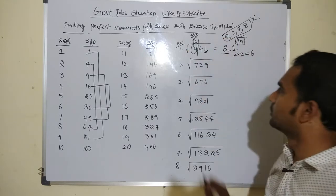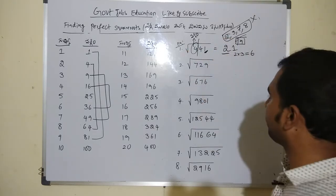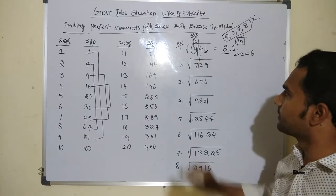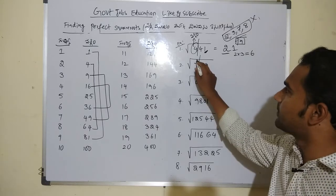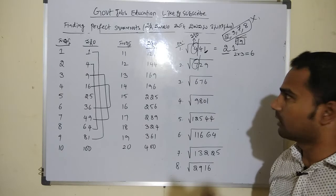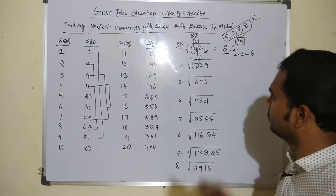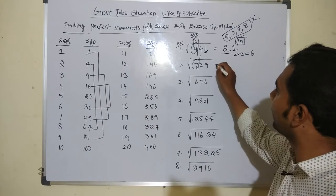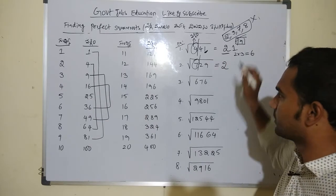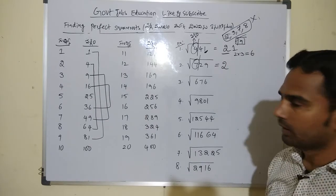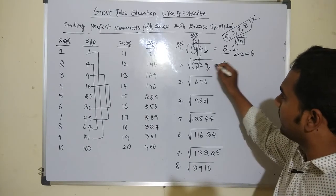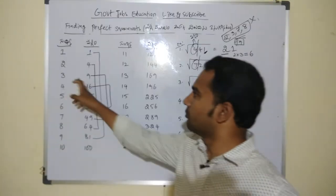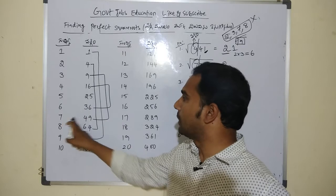Next problem: left side is 7, which is not a perfect square. So the nearest perfect square is 4, meaning 2 is the perfect square root. The unit value is 9. Since 9 is the unit digit, the square root candidates are 3 or 7 — giving us 23 or 27 as the two chances.